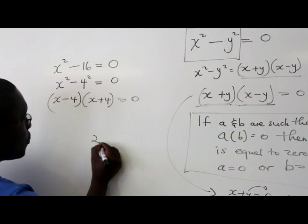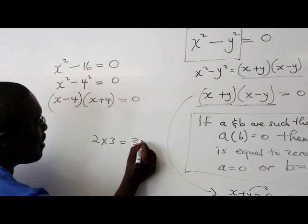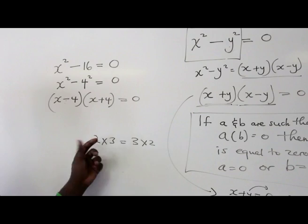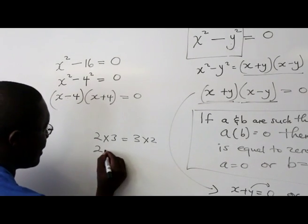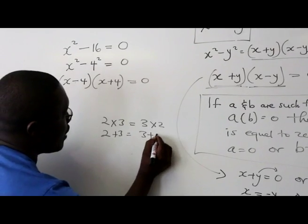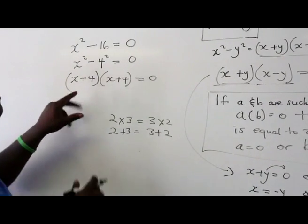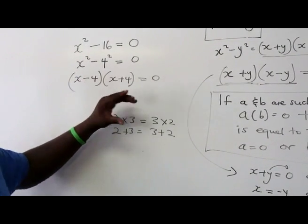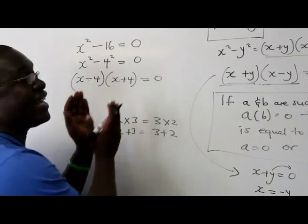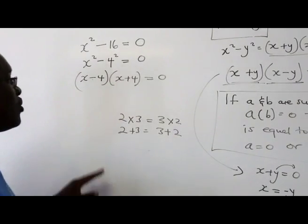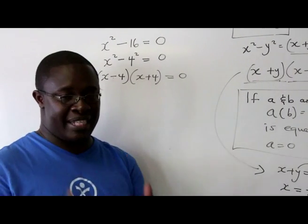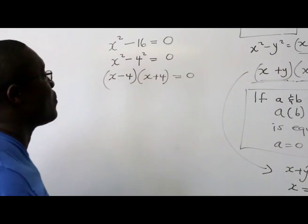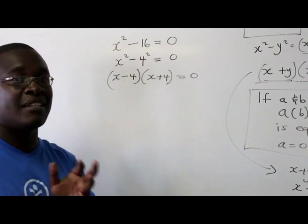It's because multiplication is commutative. If I say 2 × 3, it's the same as saying 3 × 2. So the order doesn't matter. Addition is also commutative. 2 + 3 = 3 + 2. So it doesn't matter if I start with the negative or the positive as long as both factors are represented. It's always important to remember the commutative property of real numbers under addition and multiplication.